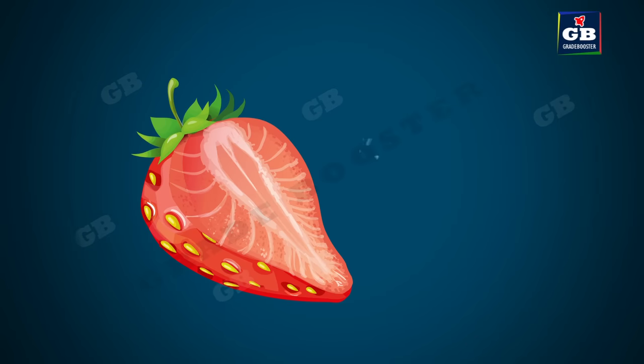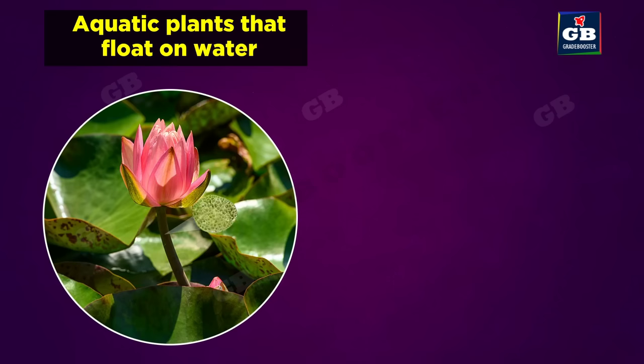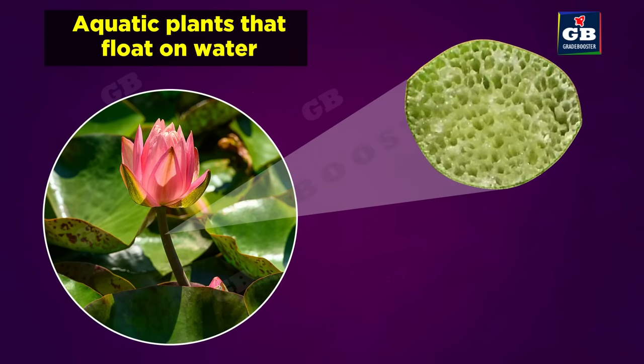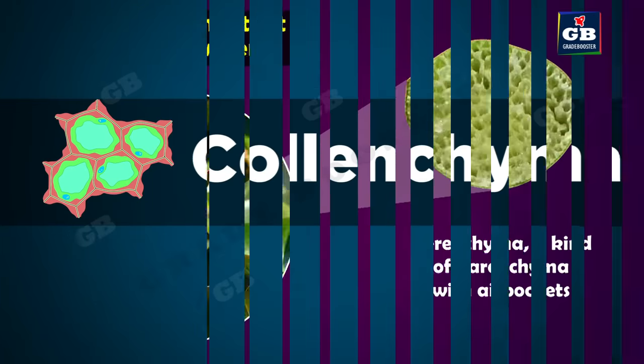Parenchyma stores food. The pulp of fruits is nothing but parenchyma tissue, hence it stores food. Parenchyma also makes plants float. In aquatic plants, large air cavities are present in parenchyma which helps the plant to float on water. This parenchyma is called aerenchyma.